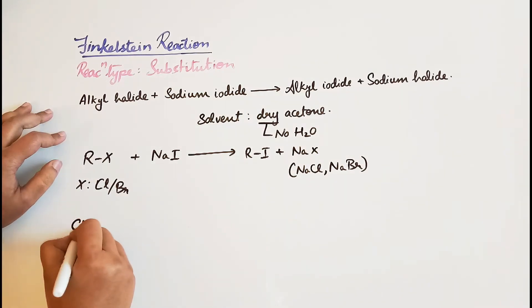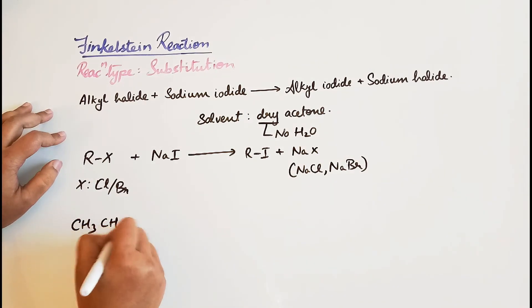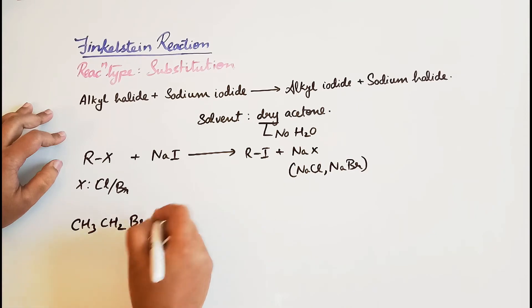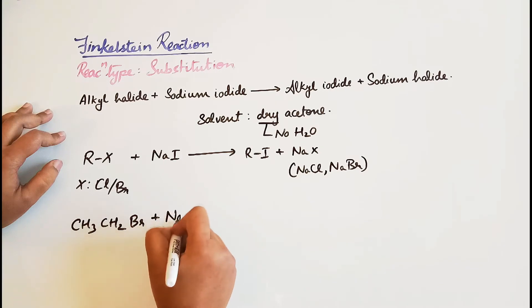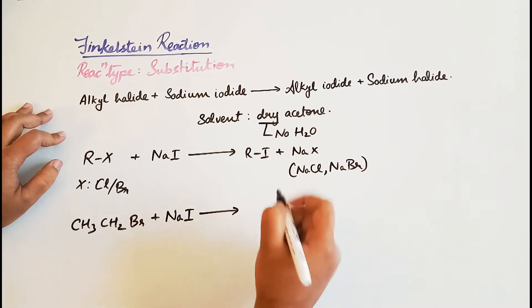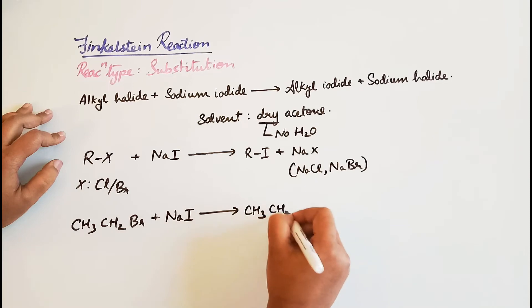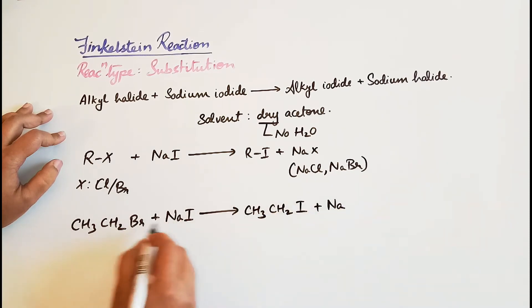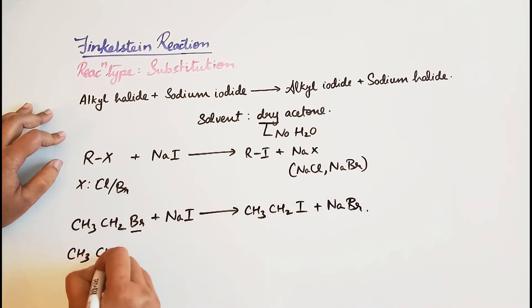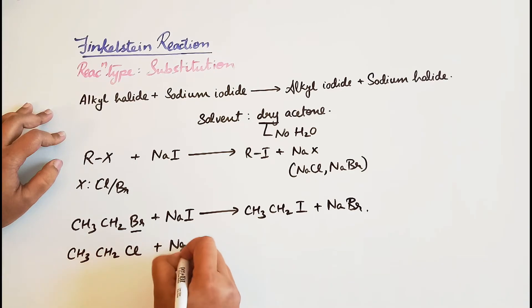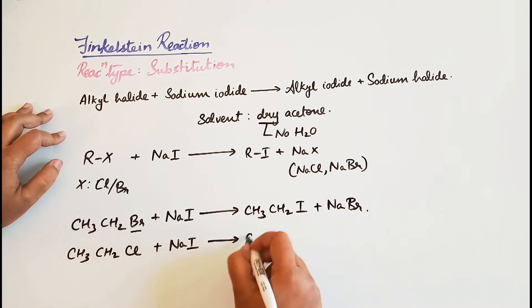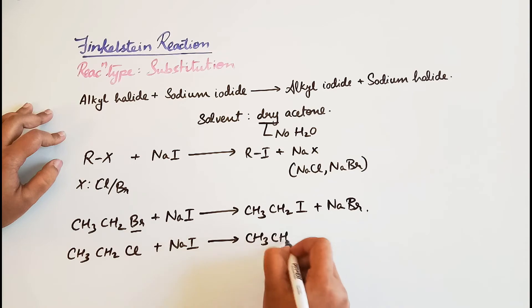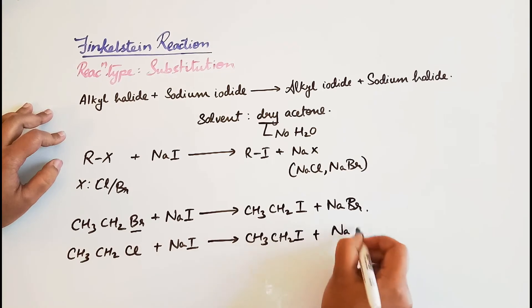For example, CH3CH2Br, which is bromoethane, reacts with NaI to form CH3CH2I, which is iodoethane, plus NaBr. Or CH3CH2Cl reacts with sodium iodide to form CH3CH2I plus NaCl.